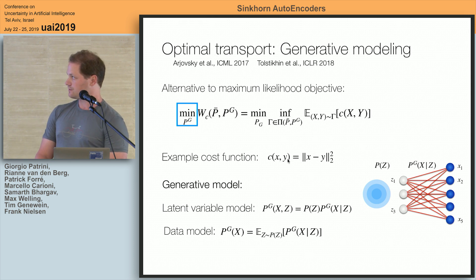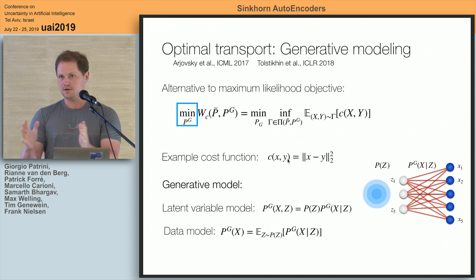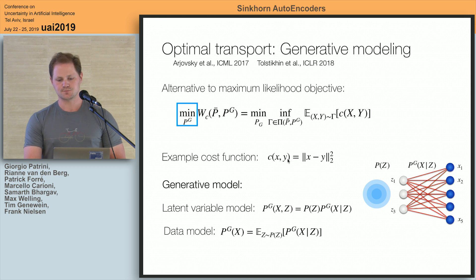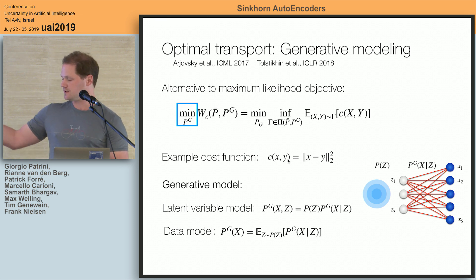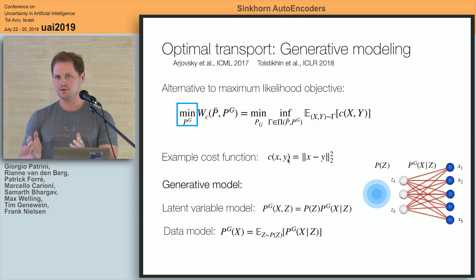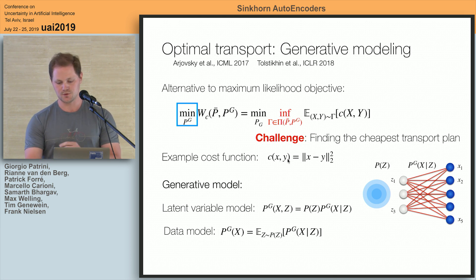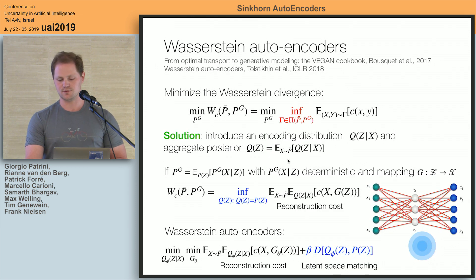For generative modeling, we look at the optimal transport distance between the true distribution and the generated distribution, and minimize it with respect to the generator to make them close to each other. The cost function is typically the L2 norm. You sample from the latent code, put it through the generator, and get an image that should look realistic and reflect the true distribution. The challenge is finding the cheapest transport plan, which is very difficult in high-dimensional settings. Standard algorithms suffer from the curse of dimensionality.